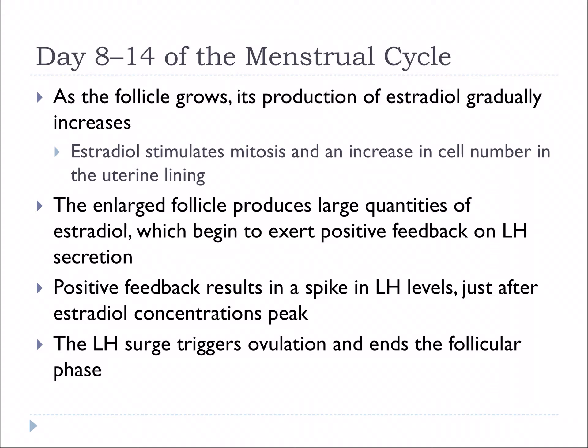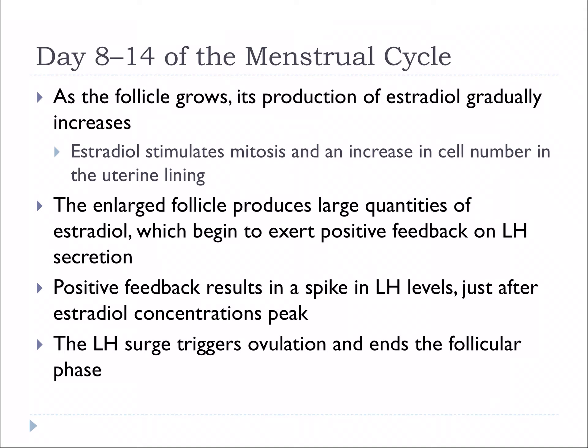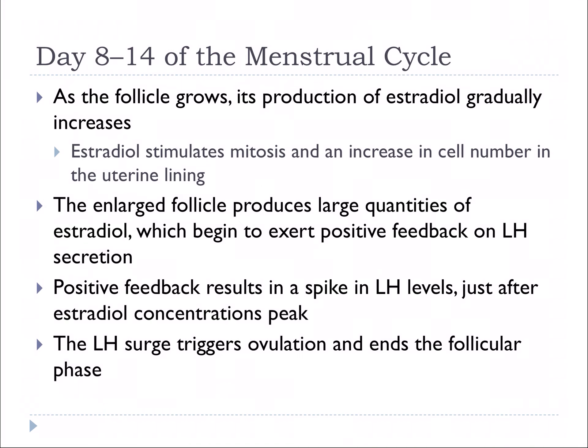On days eight to fourteen, as the follicle grows, estradiol gradually increases. The enlarged follicle produces large quantities of estradiol, which begin to exert positive feedback on luteinizing hormone. Now we see luteinizing hormone spike. This surge of luteinizing hormone triggers ovulation. The positive feedback between luteinizing hormone and estradiol causes the egg to be released — ovulation.